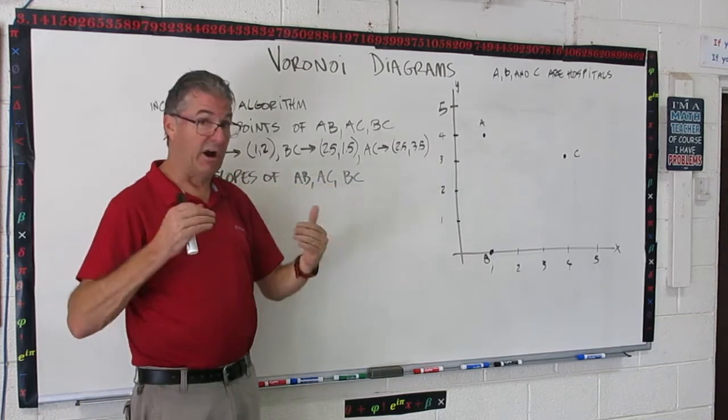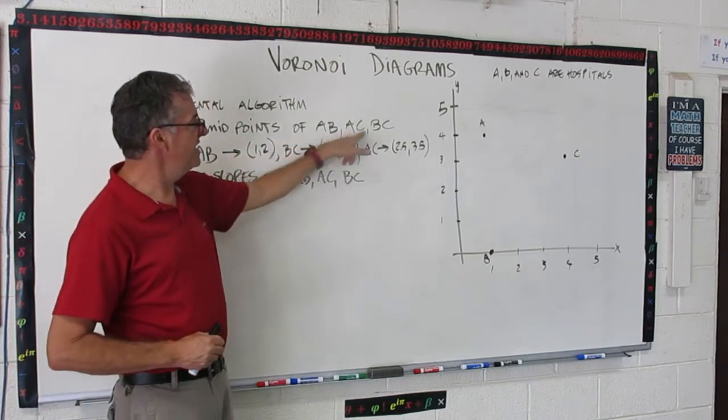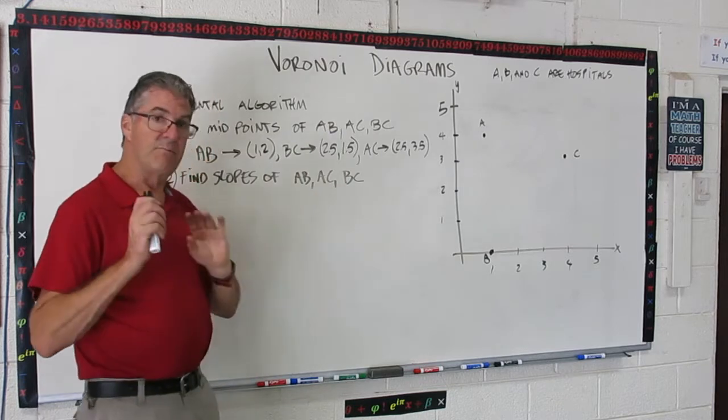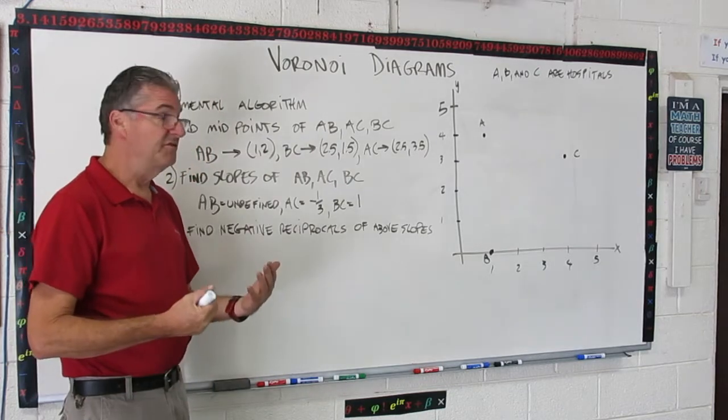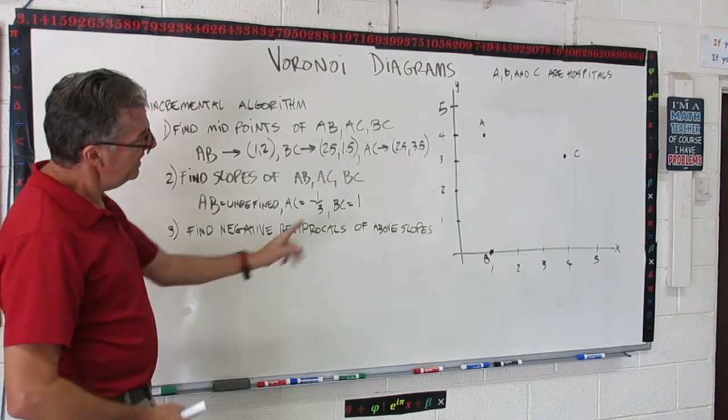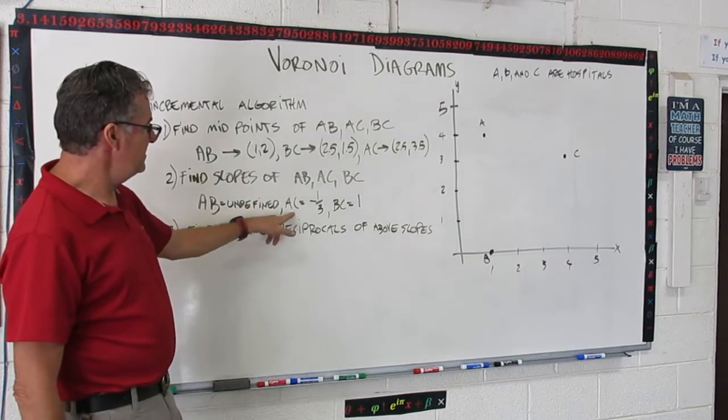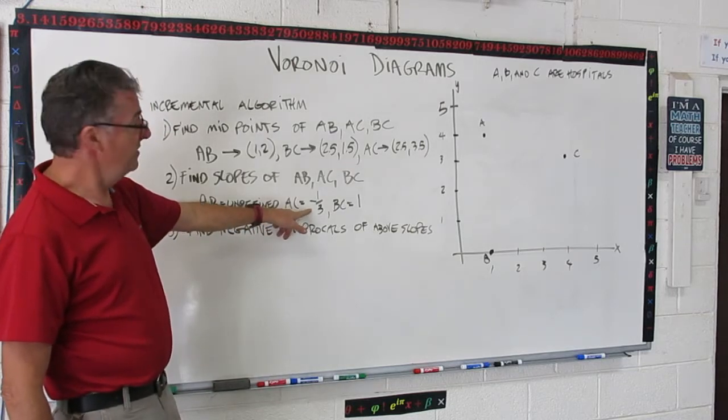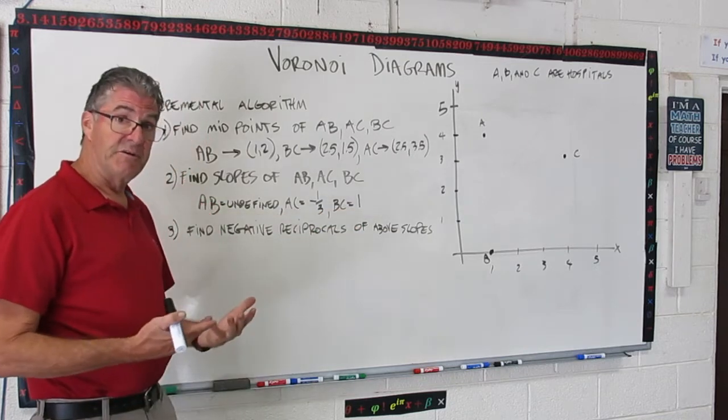All right, next step in our incremental algorithm is find the slopes of these same segments, AB, AC, and BC right there. So go ahead and pause the video and work up that math. All right, let's see how you did. Here are my slopes. AB is undefined. AB is a vertical line, so it has an undefined slope. AC is minus one third, and BC is a slope of one. Okay, so there are your three slopes.